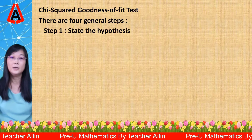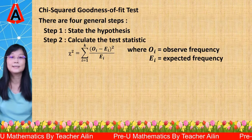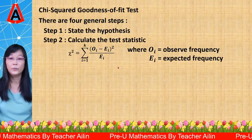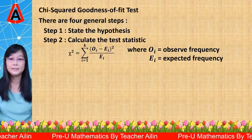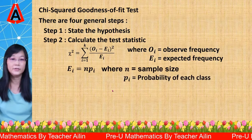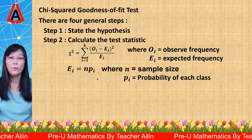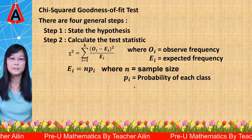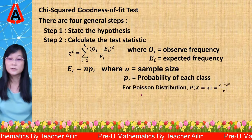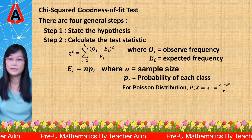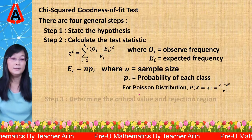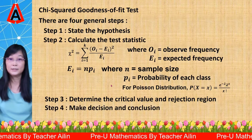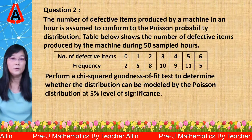The first step is to set the hypothesis. The second step is to calculate the test statistic — that is chi-square equals the sum of (O minus E) squared divided by E, where O is the observed frequency and E is the expected frequency. To calculate E, we use the formula N times P, where N is sample size and P is the probability of each class. Since we are testing Poisson distribution, we use the Poisson probability formula. Step three is to determine the critical value and rejection region. Step four is to make a decision and conclusion. So now we go to the question.